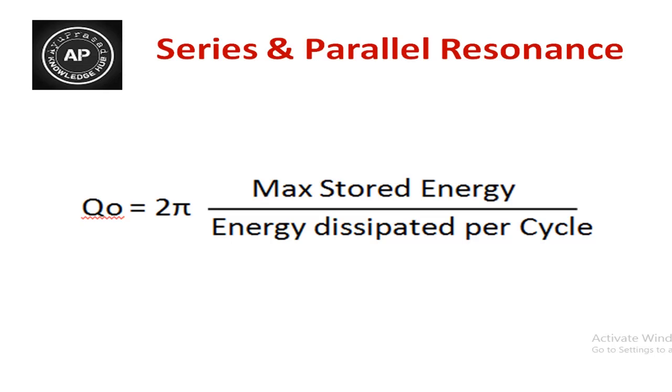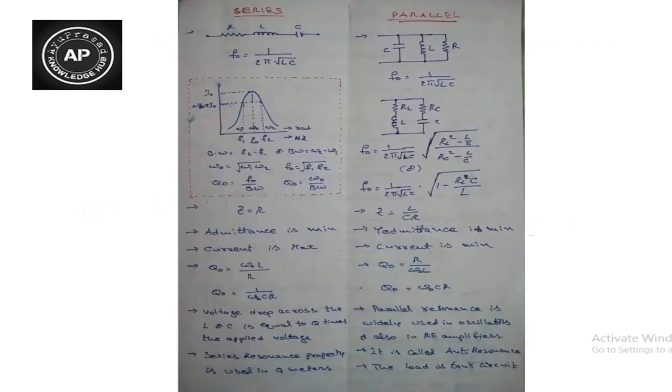Next is the Q factor, or quality factor. The quality factor at resonance, denoted Q₀, is equal to 2π times maximum stored energy divided by energy dissipated per cycle.